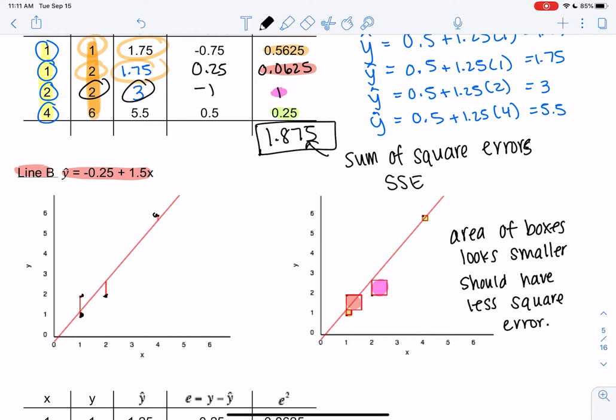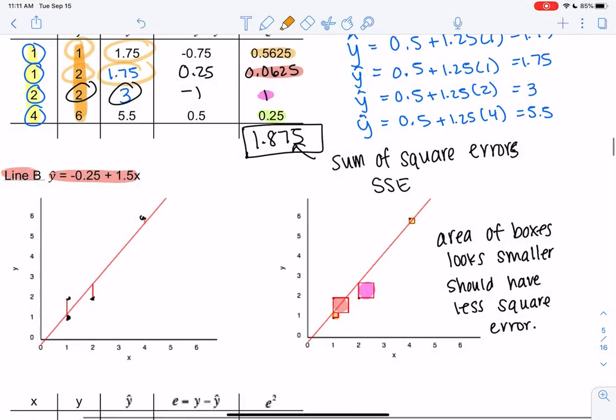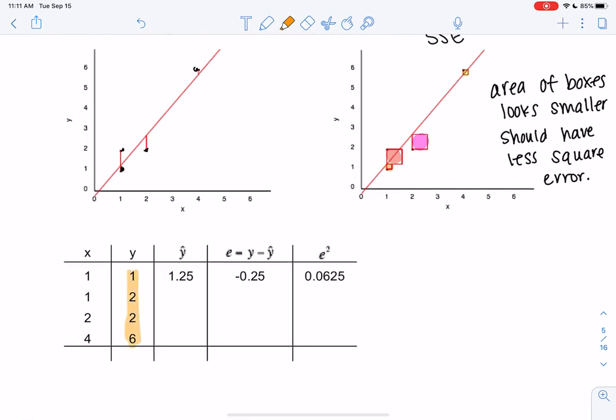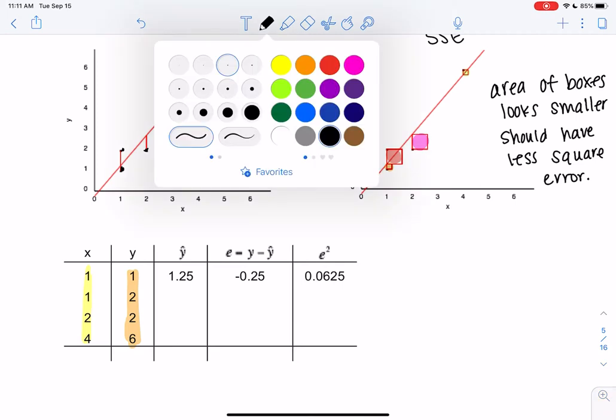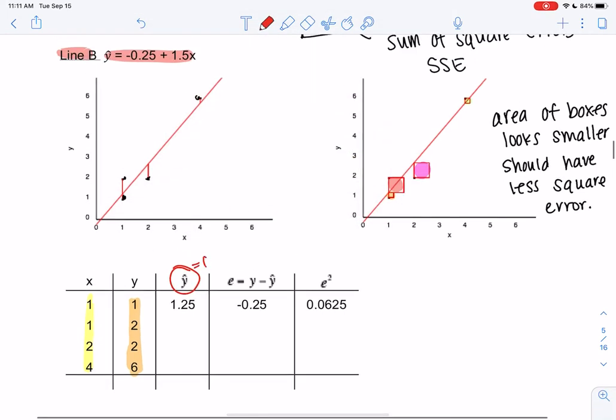But let's go ahead and check that out. And so this is a different equation now. Same points. The y values haven't changed. The x values haven't changed. But the y hats have changed. Because we're looking at a new equation. Negative 0.25 plus 1.5x. So we will learn how to find these lines shortly. Right now we're just comparing two lines.